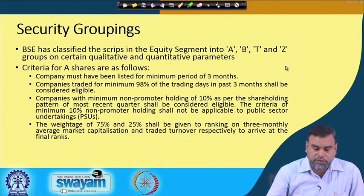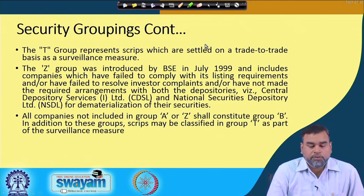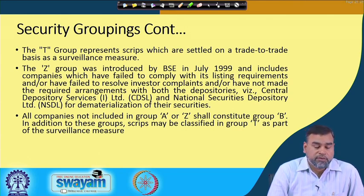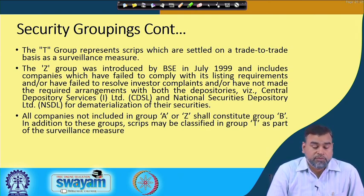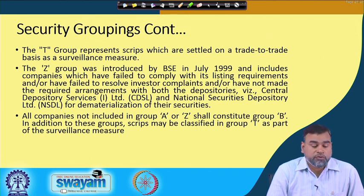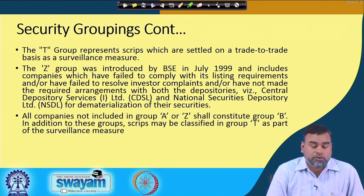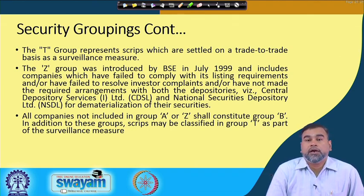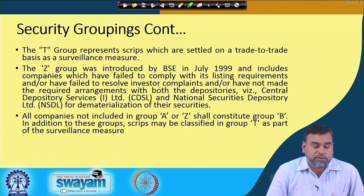The T group represents scripts or shares which are settled on a trade-to-trade basis as a surveillance measure. This means there are some issues or grievances related to those stocks, or they are not fulfilling certain criteria. From time to time, those stocks will be under surveillance to determine whether they should remain in this category or be eligible for trading. On a case-by-case basis, those scripts are categorized as a surveillance measure.